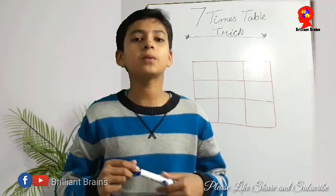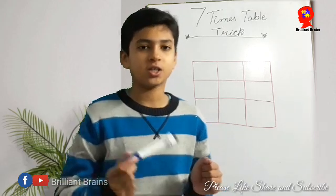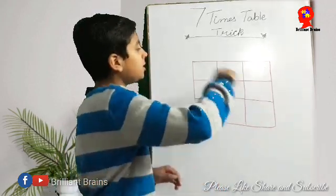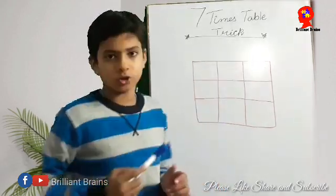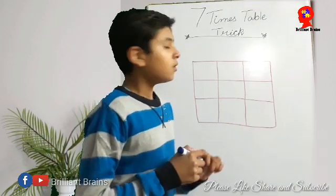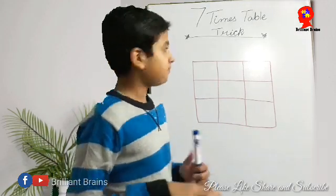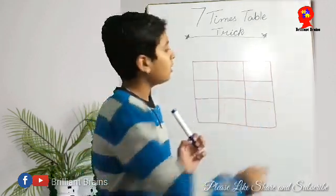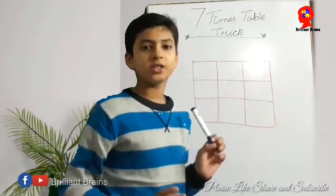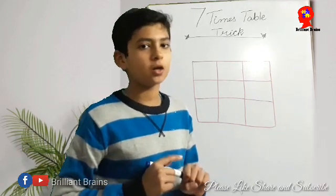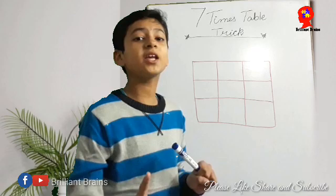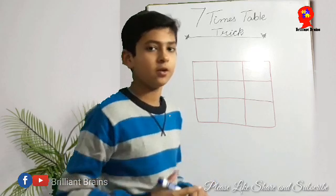Friends, now let's start our trick. We need 3 columns and 3 rows. Now let's start our first counting from the right side of the first box. This will be our table.